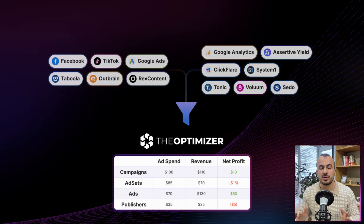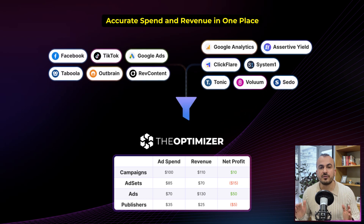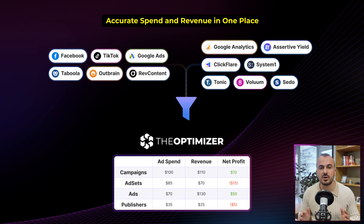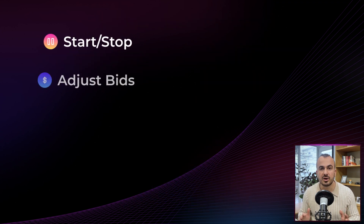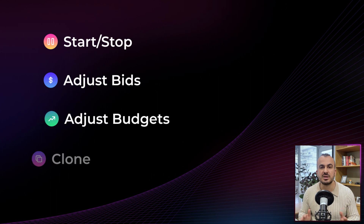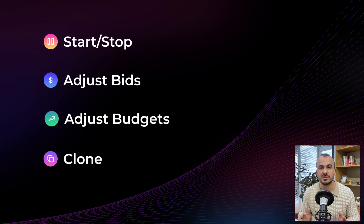First, the optimizer will combine all of your ad spend and revenue in one place. This way you will know the exact profit at any given time for every campaign you are running. Plus, you can work on your campaigns – start, stop, change bids, budgets, etc. – without leaving the optimizer. No more need to log in to every single traffic source to make adjustments to your campaigns.